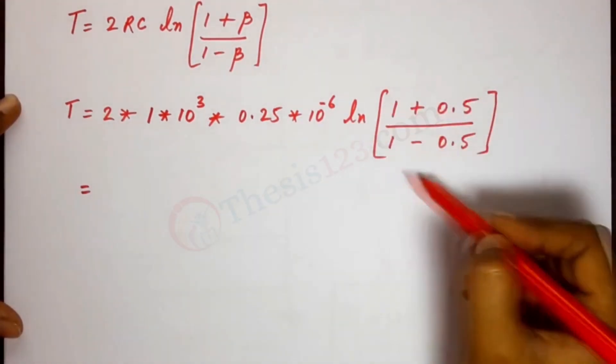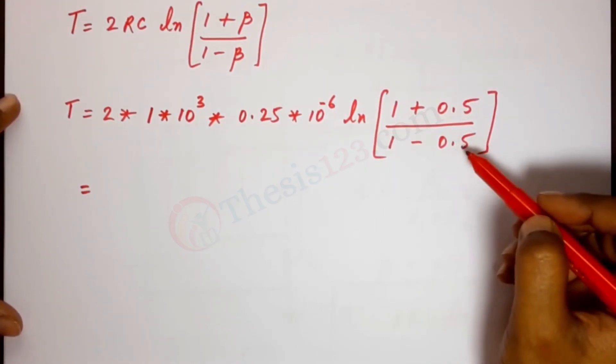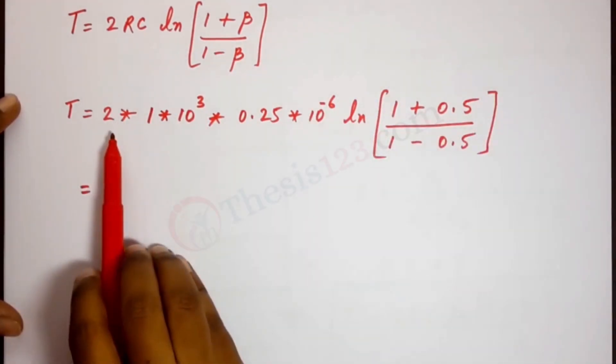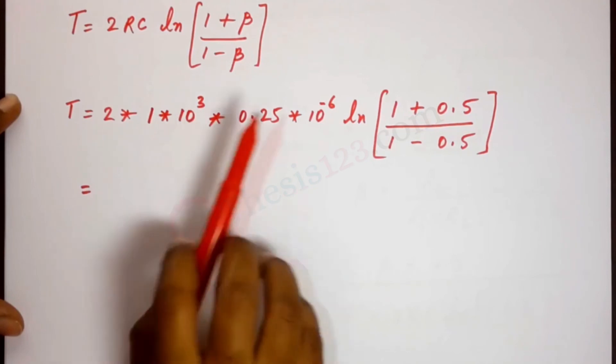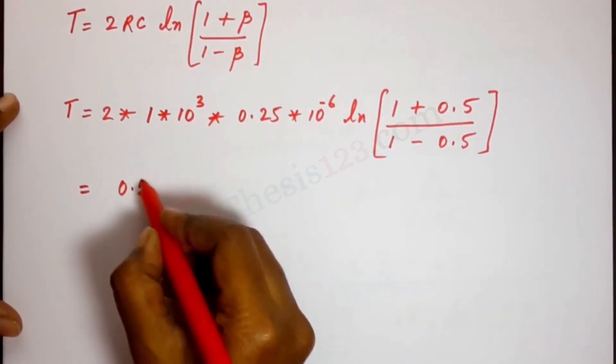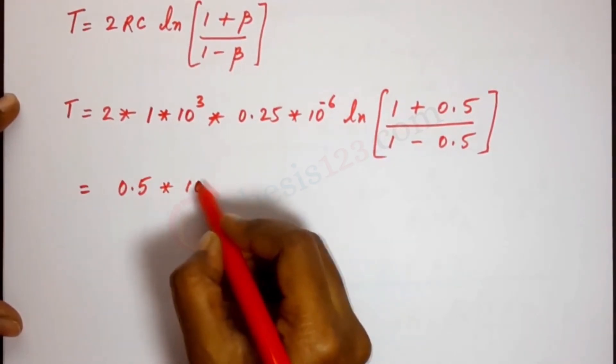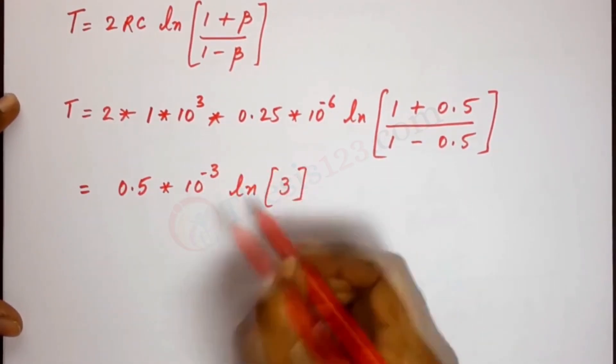Ln of 1 plus beta, we just found it to be 0.5, divided by 1 minus 0.5. Now this entire part, 1 plus 0.5 divided by 1 minus 0.5, comes to 3. And let's see here, we have 2 into 0.25 and then 10 power 3, 10 power minus 6. So we will obtain 0.5 into 10 power minus 3 Ln of 3.